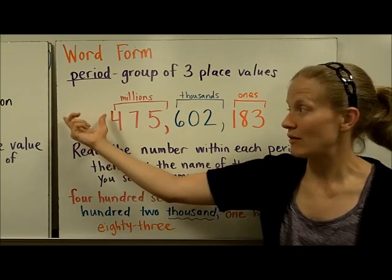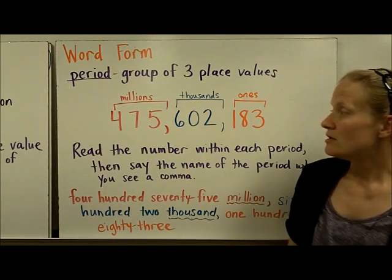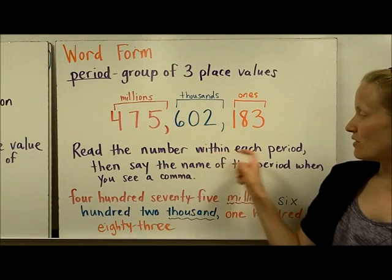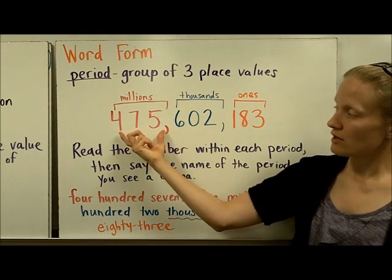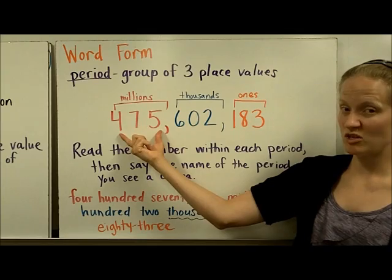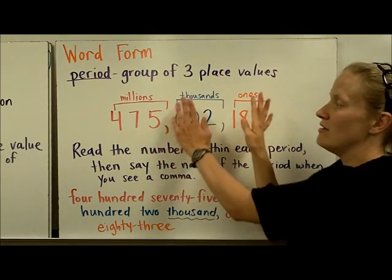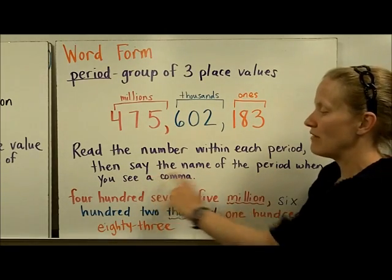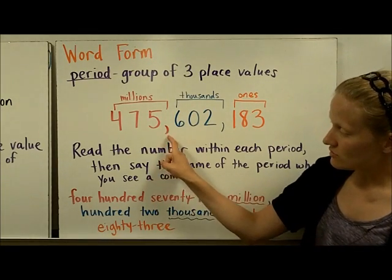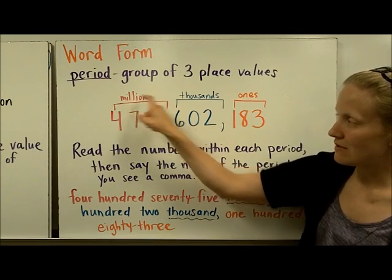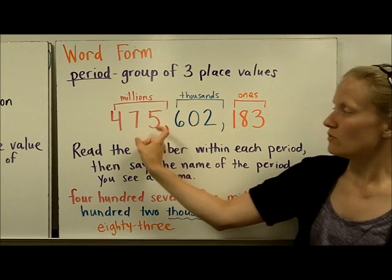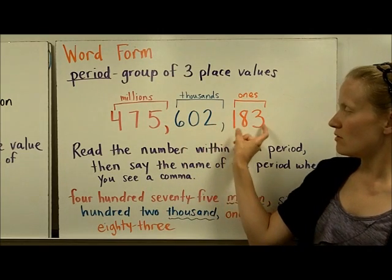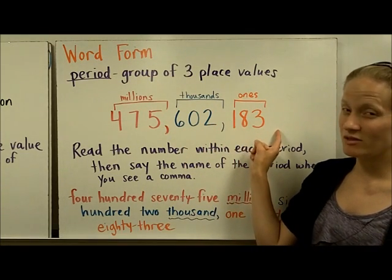And of course, if you had three more digits, that would make the billions period. So in order to read this large number, you're going to read the number within each period. You're going to start here and read this number just like you would normally read this number if the rest of it wasn't here. Then you're going to say the name of the period every time you see a comma. So read it, say the name of the period, read it, say the name of the period, read it. And we don't actually say the ones place at the end.